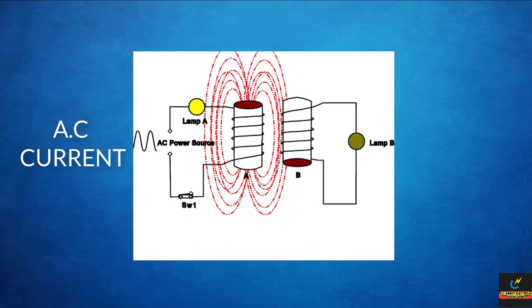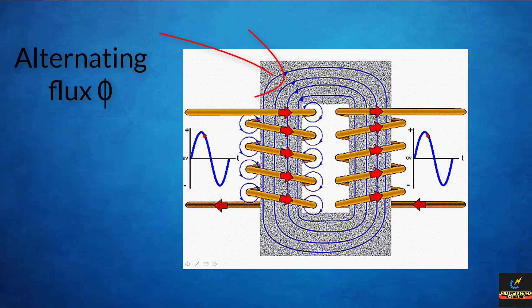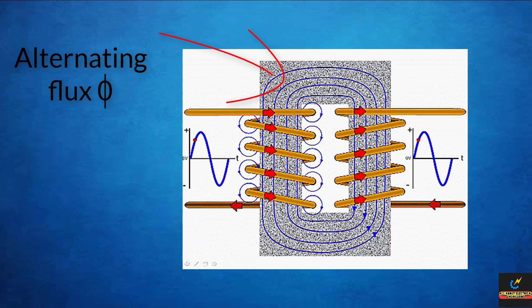But for alternating current, the polarity of the current changes 50 times per second in India because our power frequency is 50 hertz. So now an alternating magnetic flux phi is set up in the core material of the transformer.